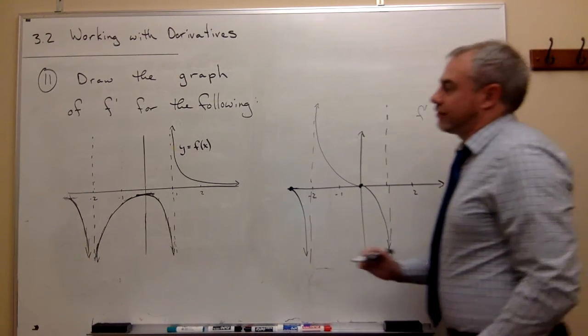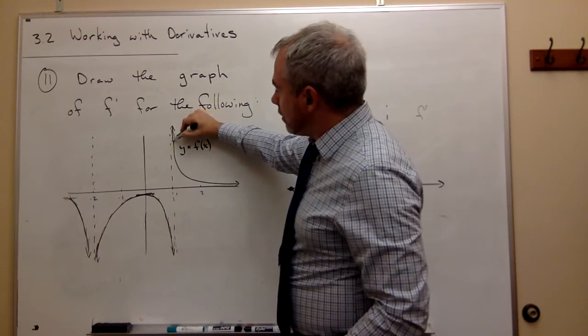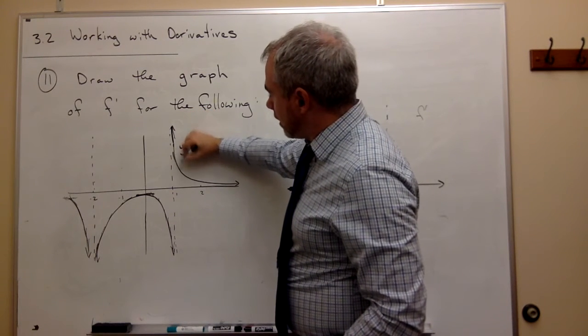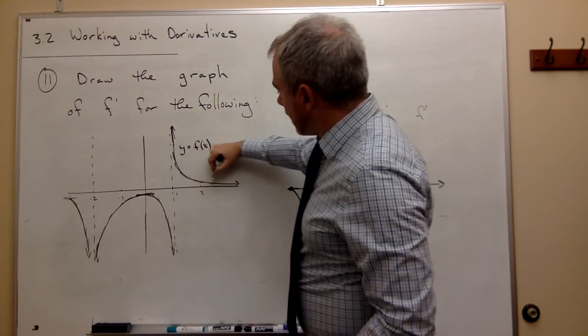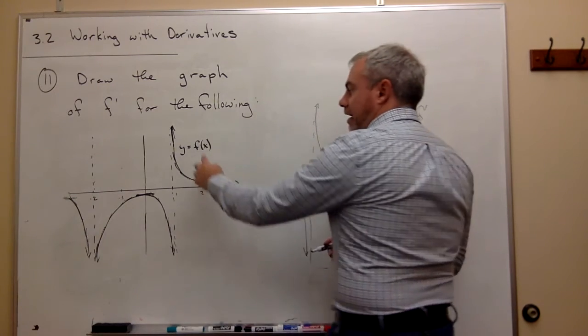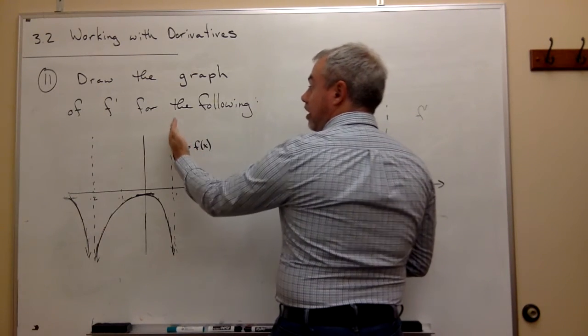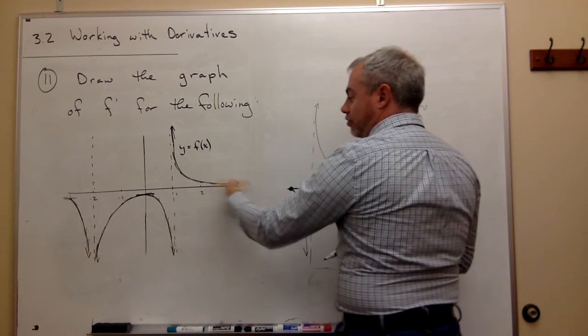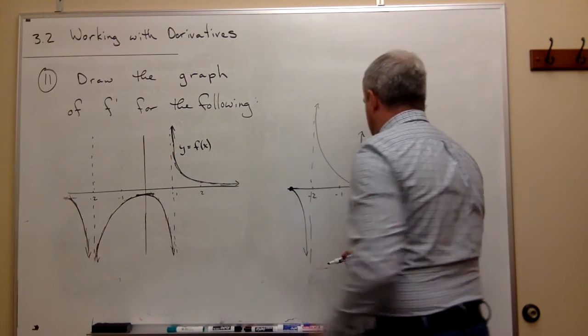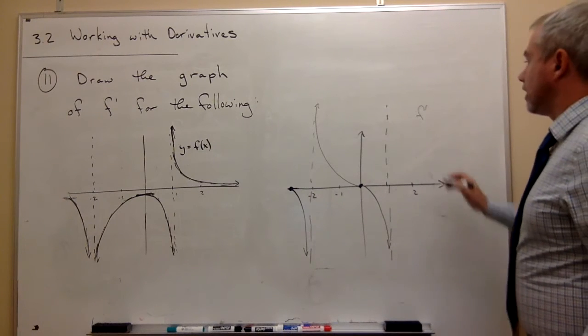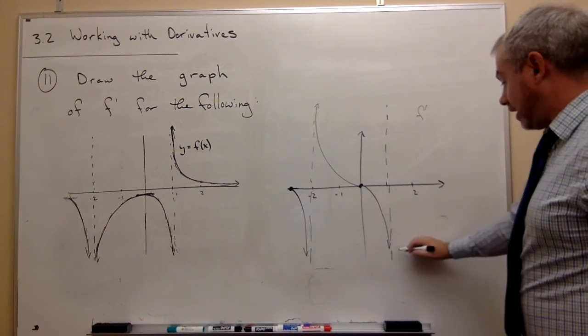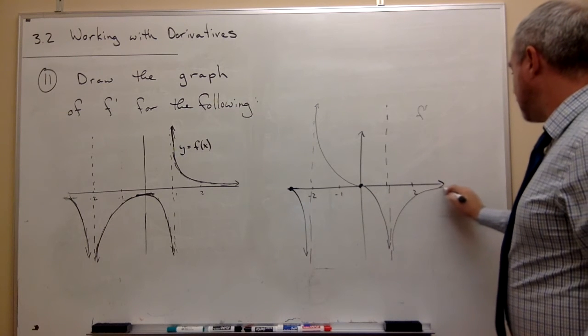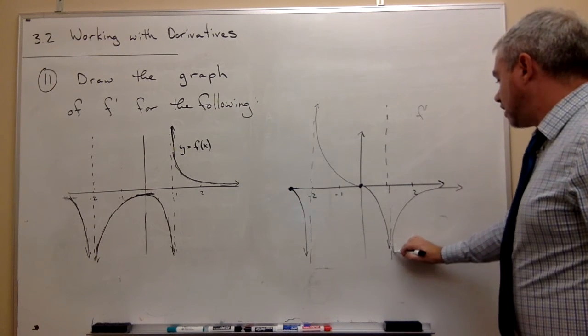Now what happens over here? Are these positive slopes or negative slopes here? Everything is a negative slope, and these negative slopes start out being very negative, and then as we head out towards infinity, they get closer and closer to 0. So they start out being very negative, and then they get closer and closer to 0.